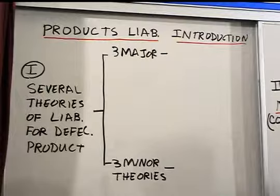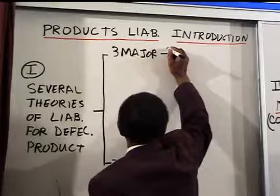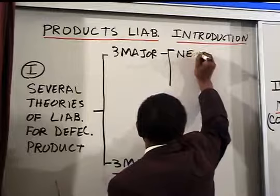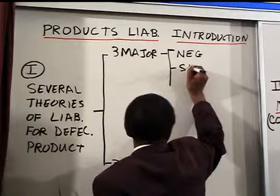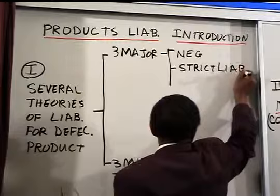The three major theories for liability for a defective product are negligence, strict liability, and breach of warranty.